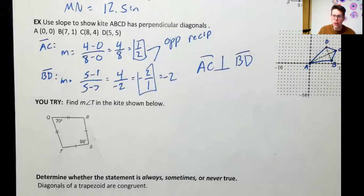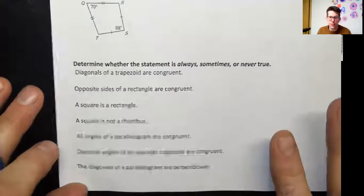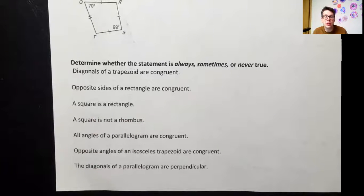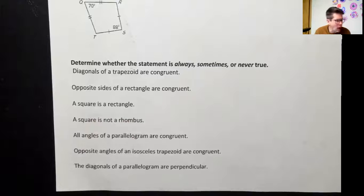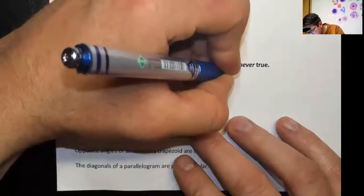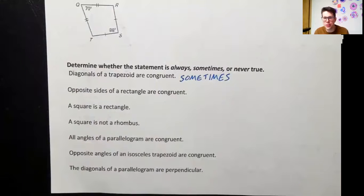Now for always, sometimes, and never problems — very popular in our quadrilateral unit. First: diagonals of a trapezoid are congruent. Trapezoids can look different, so the answer is sometimes — specifically when the trapezoid is an isosceles trapezoid. If it's a different type of trapezoid, the diagonals won't match. Next: opposite sides of a rectangle are congruent — that is always true, because all rectangles are parallelograms, and the parallelogram opposite sides theorem guarantees congruence.